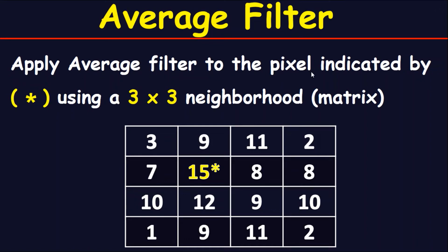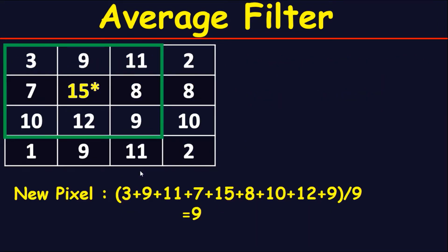Apply average filter to the pixel indicated by the asterisk using a 3x3 neighborhood or matrix. We are going to choose a 3x3 matrix from the original image, and the middle of this 3x3 matrix will be the required pixel. This is the 3x3 matrix.